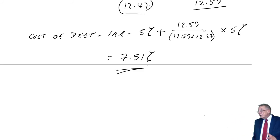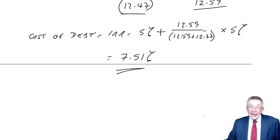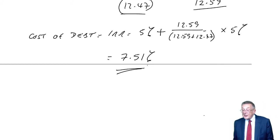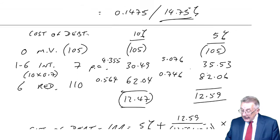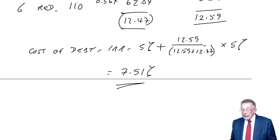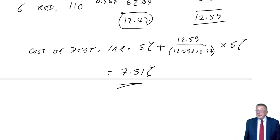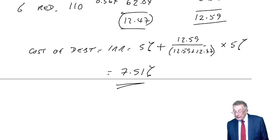Again, as you'd expect, it's lower than the cost of equity, partly because debt is less risky. So investors will accept less. But also, of course, because of tax. Debt interest gets tax relief, whereas equity doesn't.